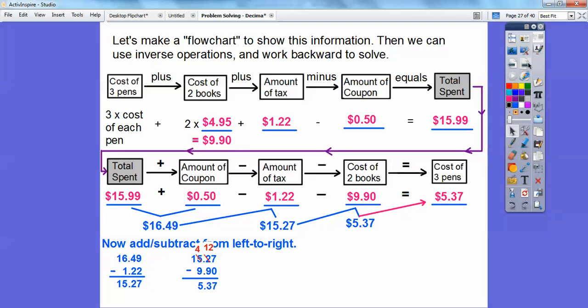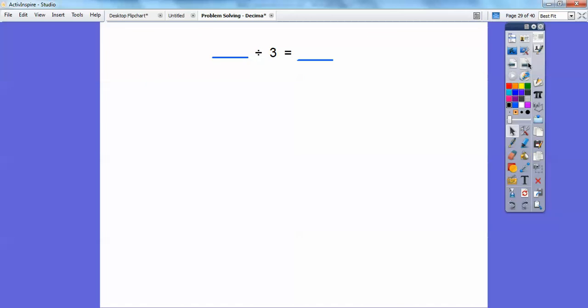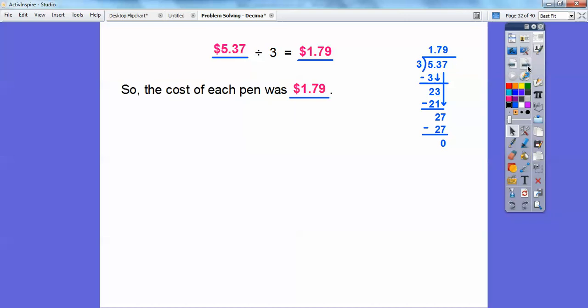Okay, now that $5.37 is for all three pens. So if we take that and divide it by three, that'll find the cost of each pen. So put in $5.37 divided by three. You can see I did that over here. We get $1.79 right there. So the cost of each pen is $1.79.